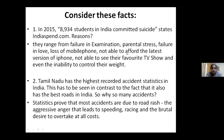Tamil Nadu had seen the highest recorded accident statistics in India, in contrast to the fact that it is the state which had the best roads in India. In spite of that, why were there so many accidents? Statistics proved that most of them were because of road rage — it was the aggressive anger which led to speeding, racing, and brutal behavior.